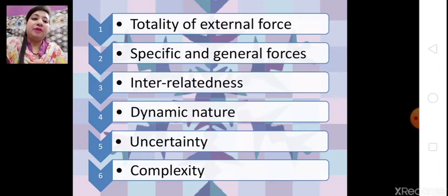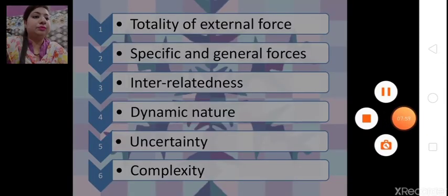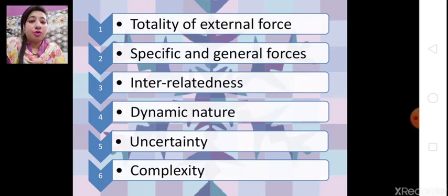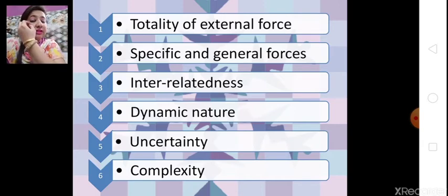We have to adopt the changes if we want to stand in the market and in business. Now the next feature is uncertainty. These forces are uncertain — we can say they frequently change. Like the fall in our economy due to coronavirus is also an external force which is uncertain. We cannot measure or expect this.